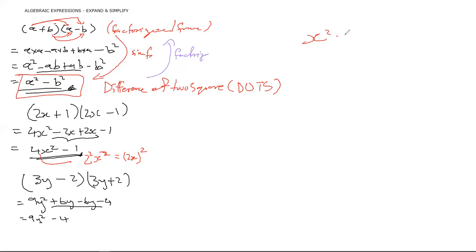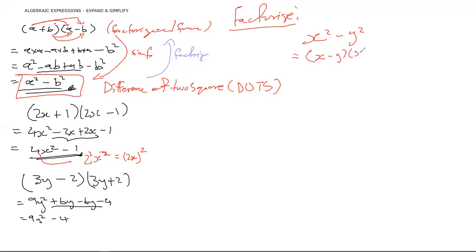So we have a formula: whenever you have an expression of the form x² minus y², and the question says factorize, you can straight away say it equals (x − y)(x + y). And yes, even if you wrote (x + y)(x − y), you are absolutely correct.